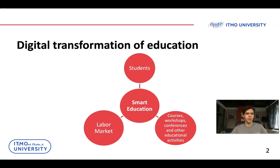First of all, let's take a look at the digital transformation of higher education. We have entities such as students, the labor market, and educational activities like courses, workshops, conferences, and other activities. We want to connect all these entities using their data and applying artificial intelligence technology to make this process smart, automatic, and efficient.